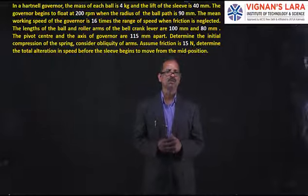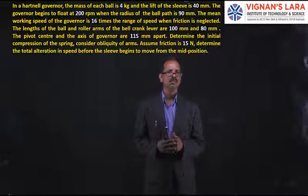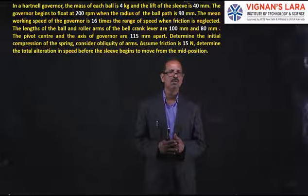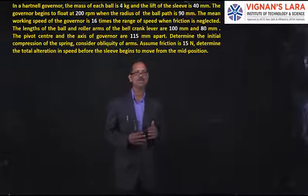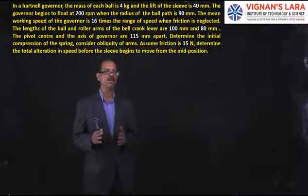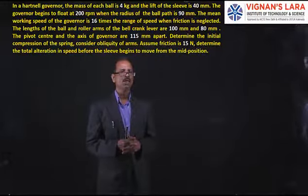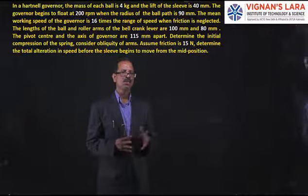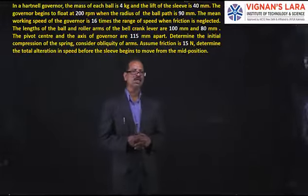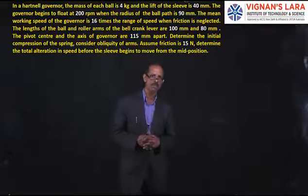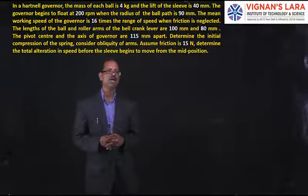The length of the ball and roller arms of the bell crank lever are 100 mm and 80 mm. The pivot center and the axis of the governor are 115 mm apart. Determine the initial compression of the spring, considering obliquity of arms. Assume friction is 15 Newtons.